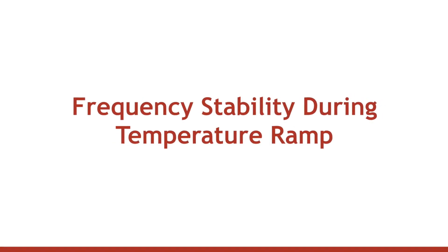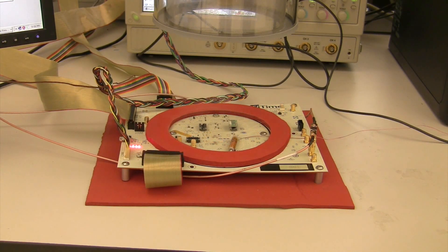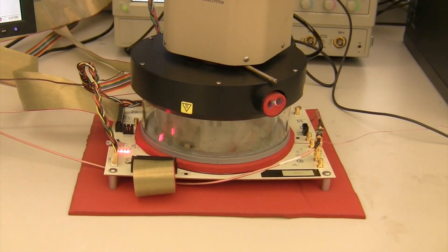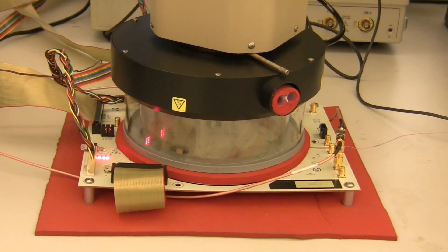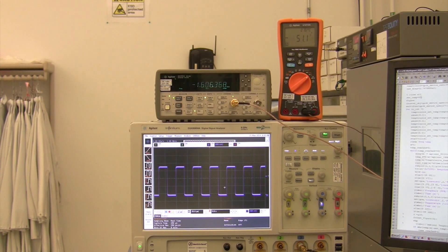In this experiment, we're using a Temptronics temperature chamber that will expose the TCXO to up to 4 degrees C per second rate of change in temperature. This is a very harsh environmental change, and most applications won't experience this type of gradient.